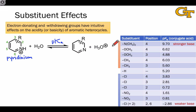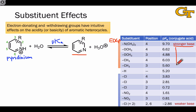When R is a strong electron-donating substituent, such as the dimethylamino group, the pKa of the pyridinium ion is very high — it's a relatively weak acid. This means the conjugate base, the substituted pyridine, is a stronger base. As the electron-donating power of the substituent decreases, the pKa goes down and the pyridinium ion becomes more acidic, meaning the substituted pyridine is less basic. This makes intuitive sense because with weaker electron-donating groups, the ring is less electron-rich and the nitrogen is a weaker base.